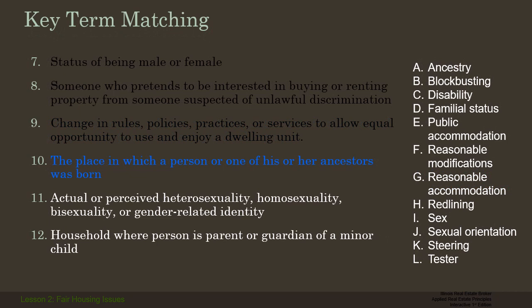Number ten: the place in which a person or one of their ancestors was born — that's ancestry. And of course that's what everybody does now with ancestry.com — everybody's got to find out who their ancestors were. When we get those results back, we're often surprised about who our ancestors really are — people we thought were our ancestors for many years, we find out we're actually from a different country.